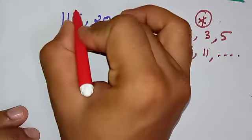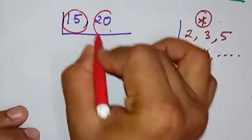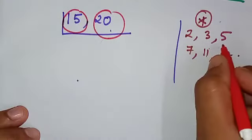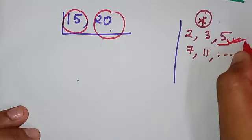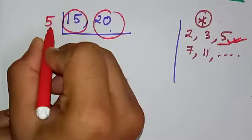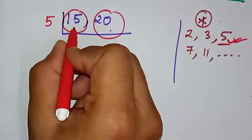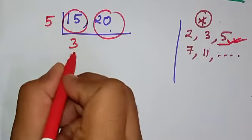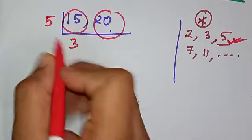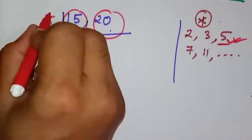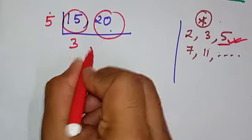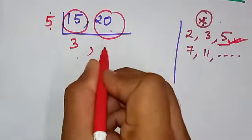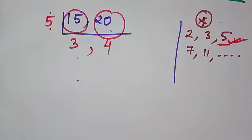So here, both of these numbers, 15 and 20, are coming in the table of 5, and you know that 5 is a prime number. So we can use 5 over here. Divide 15 by 5, you get 3—that answer will be written below in the next step. So 5 times 3 is 15, then we put comma, and 5 times 4 is 20.